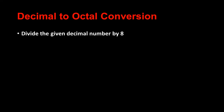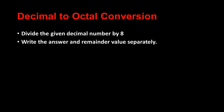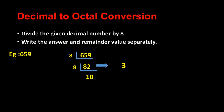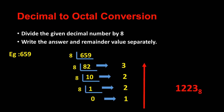To convert decimal to octal, divide the decimal value by 8 repeatedly and keep the remainders. For example, take 659. 659 ÷ 8 = 82 remainder 3; 82 ÷ 8 = 10 remainder 2; 10 ÷ 8 = 1 remainder 2; 1 ÷ 8 = 0 remainder 1. Reading the remainders from bottom to top gives the octal number 1223.